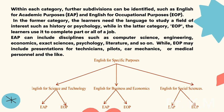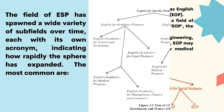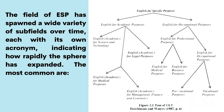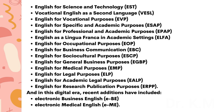The field of ESP has spawned a wide variety of subfields over time, each with its own acronym, indicating how rapidly the sphere has expanded. The most common are: English for Science and Technology (EST), Vocational English as a Second Language (VESL), English for Vocational Purposes (EVP), English for Specific and Academic Purposes (ESAP), English for Professional and Academic Purposes (EPAP), English as a Lingua Franca in Academic Settings (ELFA), English for Occupational Purposes (EOP), English for Business Communication (EBC), English for Sociocultural Purposes (ESCP), English for General Business Purposes (EGBP), English for Medical Purposes (EMP), English for Legal Purposes (ELP), English for Academic Legal Purposes (EALP), and English for Research Publication Purposes (ERPP).